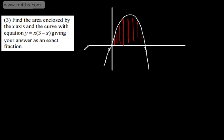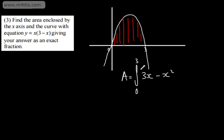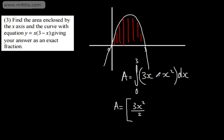We have our limits. The area will be equal to the integral from 0 to 3 of the function. Multiplying out, I'll write this as 3x minus x squared dx. We need to integrate this function, evaluate it, and give our answer as an exact fraction. All of the area we want is above the x-axis. Integrating 3x gives 3x squared divided by 2, and minus x squared gives minus x cubed over 3, or one third x cubed.